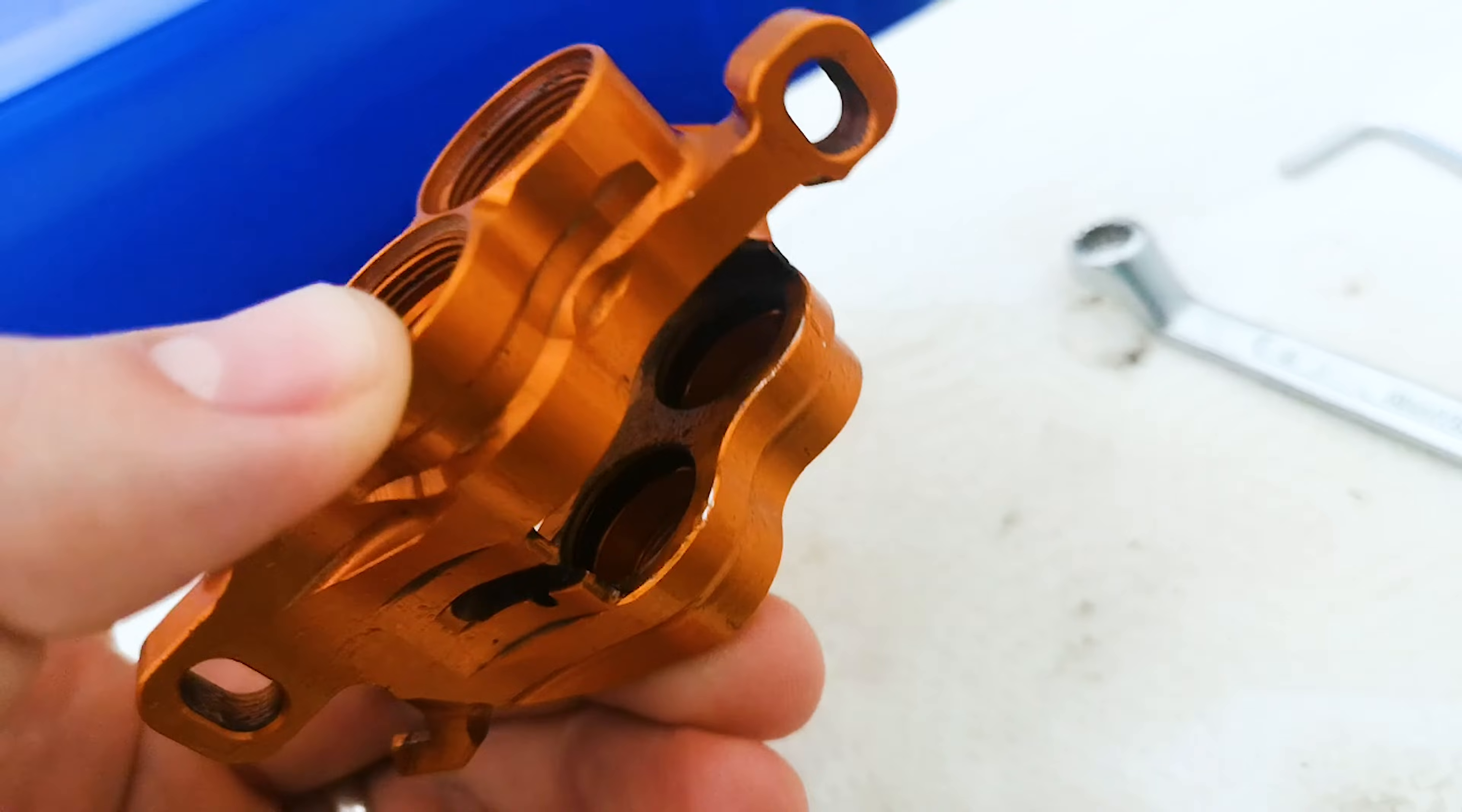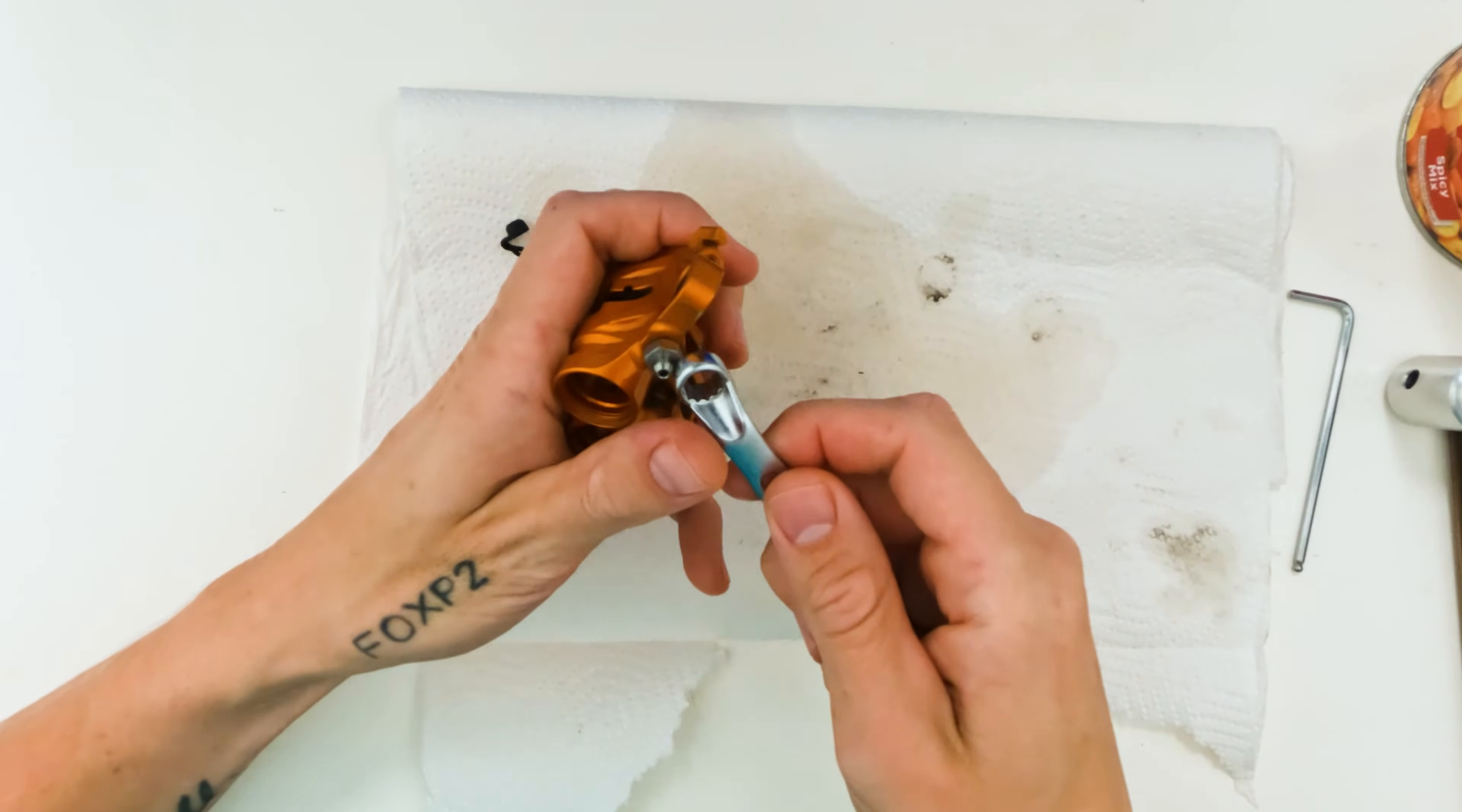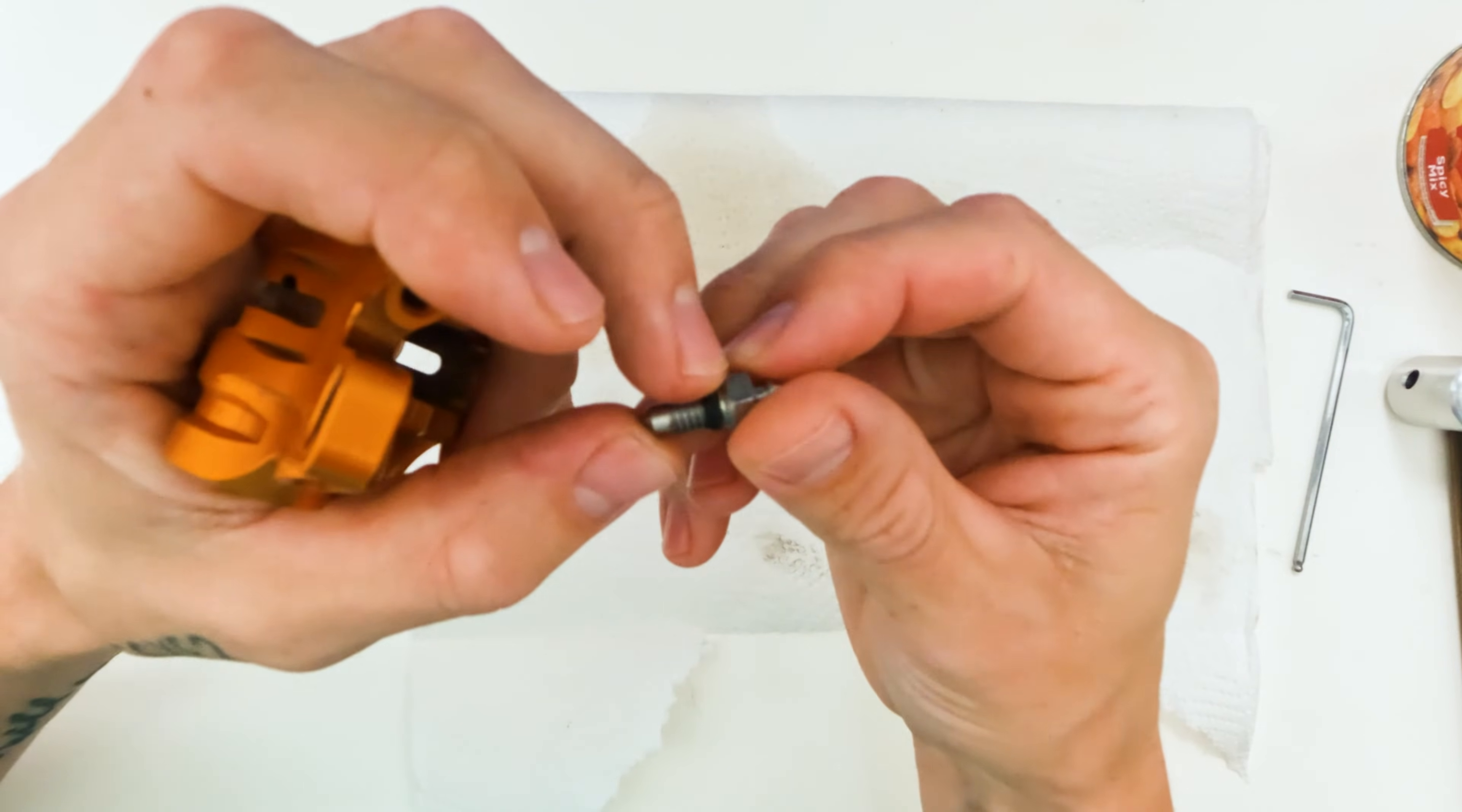And now it's completely empty and we just need to clean this one out. Also remove the bleed cap, removing the rubber little nipple guide. This is something that can start leaking if this seal is bad, and this one looks okay.